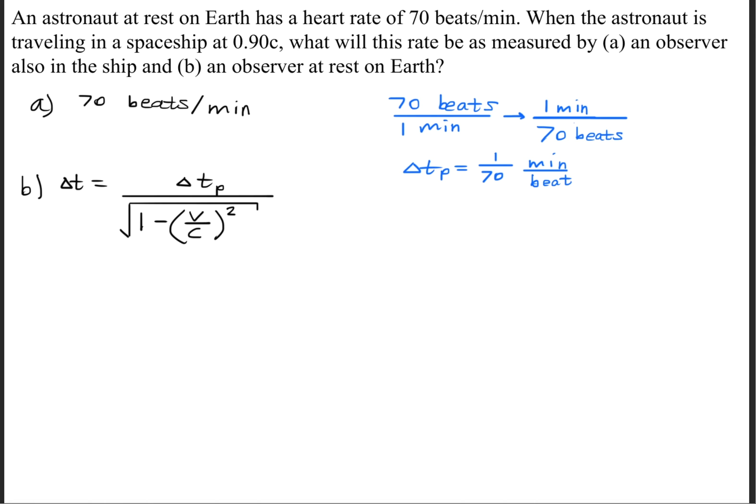Now we can plug these variables into our equation. We'll get time dilation equal to 1 over 70 minutes per beat divided by the square root of 1 minus 0.90 times the speed of light divided by the speed of light squared.